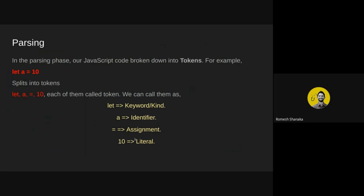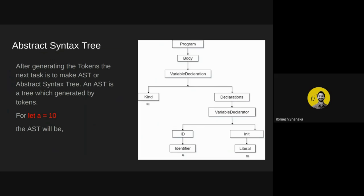In the parsing phase, our JavaScript code is broken down into tokens. For example, if we write a simple line like `let a = 10`, this splits into tokens. The job of the syntax parser is to take the code and convert it into the AST — the Abstract Syntax Tree. After generating those tokens, the next task is to build the AST, which is a tree generated from the tokens.